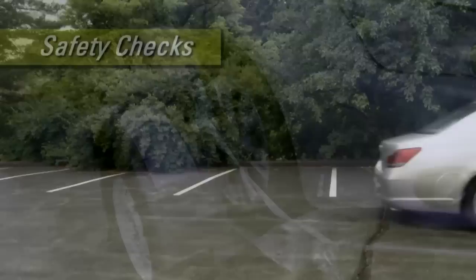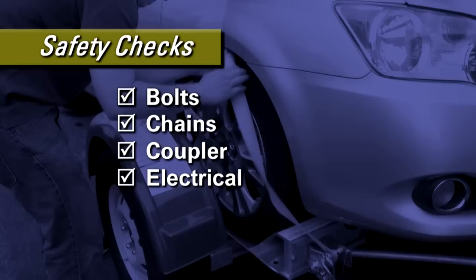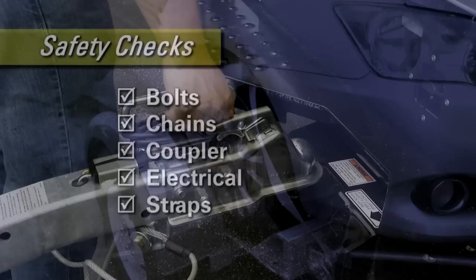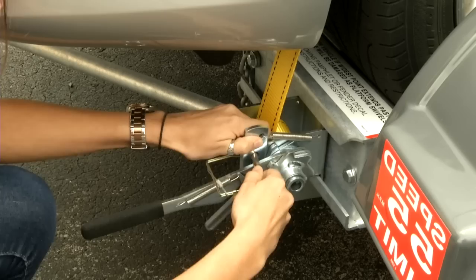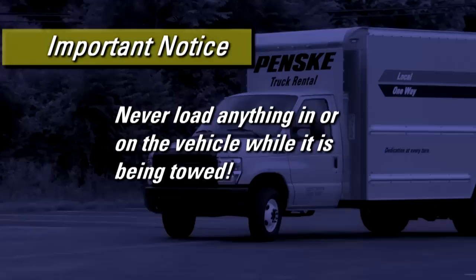Make sure the tow dolly assembly bolts, safety chains, coupler, electrical hookup, and tire straps are hooked up properly and the coupler is properly secured to the tow ball. Repeat this check after the first five miles and then every 50 miles thereafter or prior to departing from service and rest stops as these components may loosen during travel. Once everything is safely connected to the tow dolly, you're ready to tow.